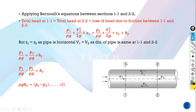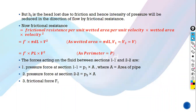What are the forces? At cross section 1, there is a force P1 into A, and at cross section 2, there is force P2 into A in the negative direction. P1 into A is in the plus x direction and P2 into A is in the minus x direction. The friction resistance will act opposite to the flow — it is a resistance — so it will act in the negative x direction.